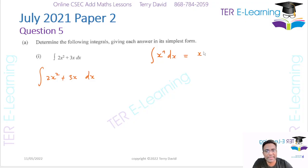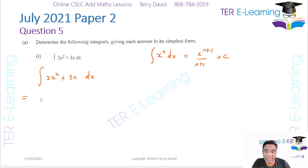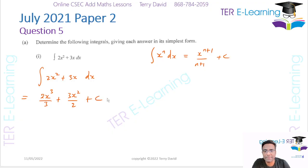The rule is: x to the power n+1 over n+1, plus c. So I'm going to integrate each part separately. Integrating 2x² gives 2x³ over 3, and integrating 3x gives 3x² over 2, plus c.